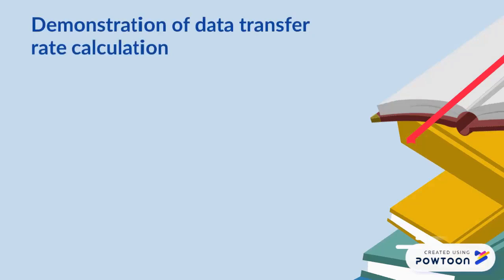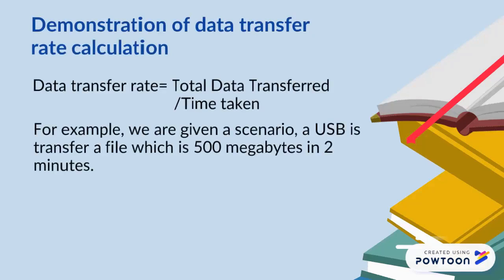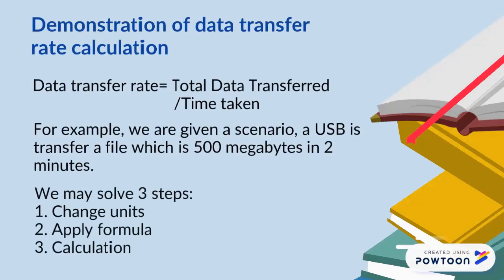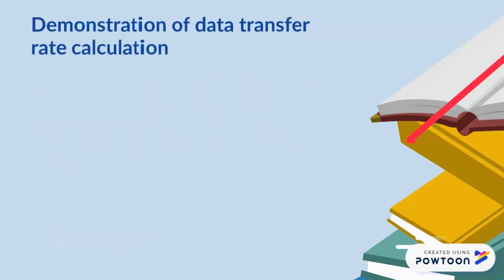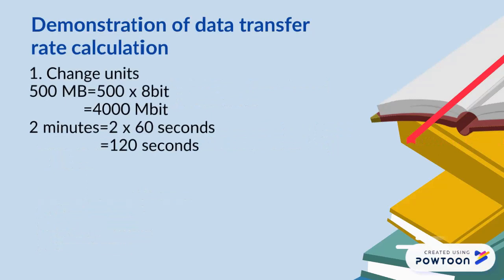Next, we want to talk about the demonstration of the data transfer rate calculation. The data transfer rate is equal to the total data transferred per second. For example, we are given a scenario where a USB is transferring a file which is 500MB in 2 minutes. We may solve the problem with 3 steps. The first step is to change the units — we change megabytes to megabits, and then change minutes to seconds.